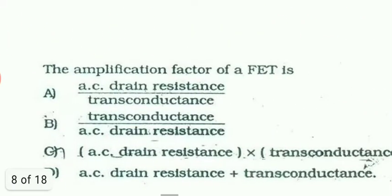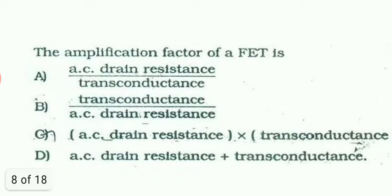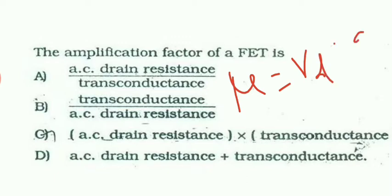Next question is the amplification factor of FET. This is also a direct question. Amplification factor mu is equal to Rd into gm. It's a direct question. Rd is the drain resistance, so AC drain resistance. Mu is amplification factor. This is a well-known relation in FET. Mu equals Rd drain resistance, gm is transconductance. So option C is the correct answer.